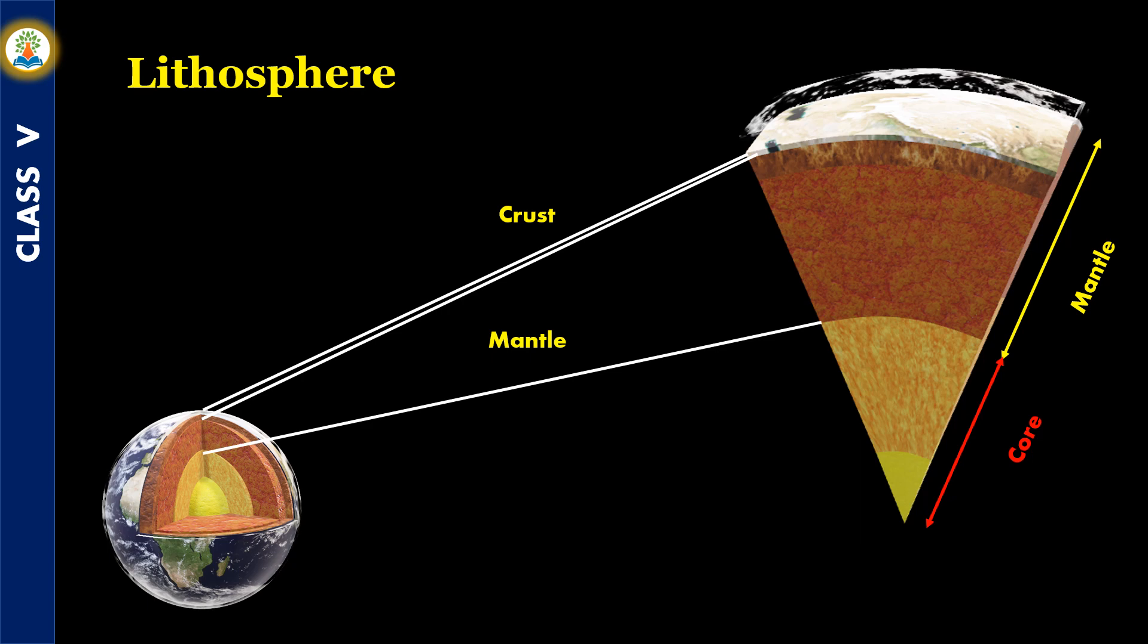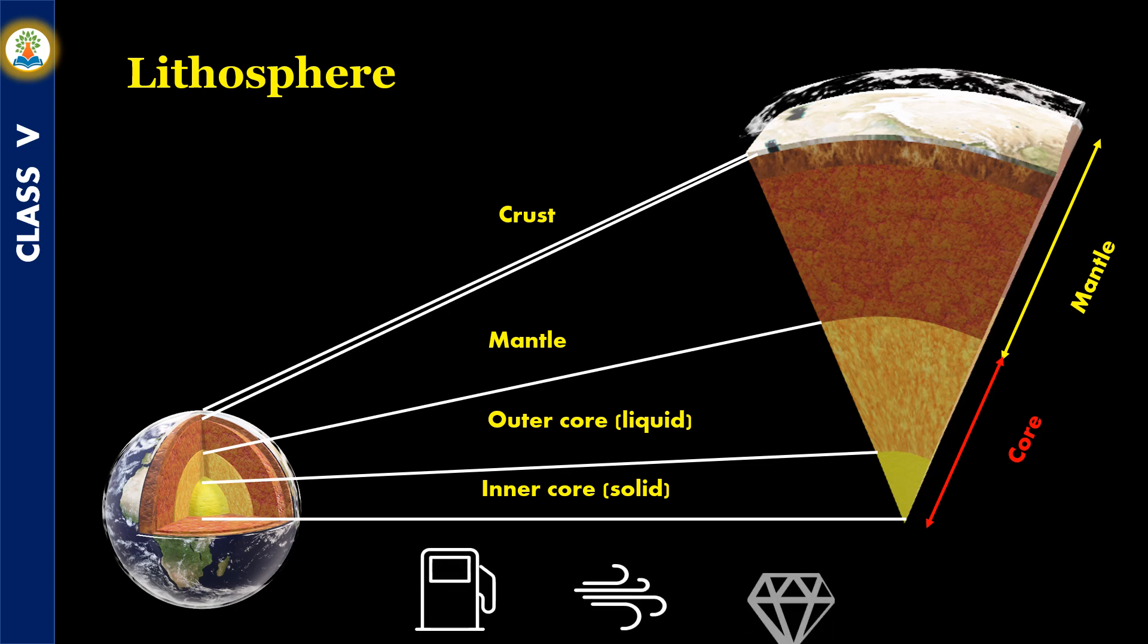As we go deep inside the Earth, it gets hotter and hotter, and the pressure increases. Core is the innermost layer which has two parts: outer core and inner core. The outer core is liquid and the inner core is solid. All the natural resources of the Earth, such as oil, gas, and minerals, are found in the lithosphere. The soil, land masses, and ocean floor are also a part of the lithosphere.